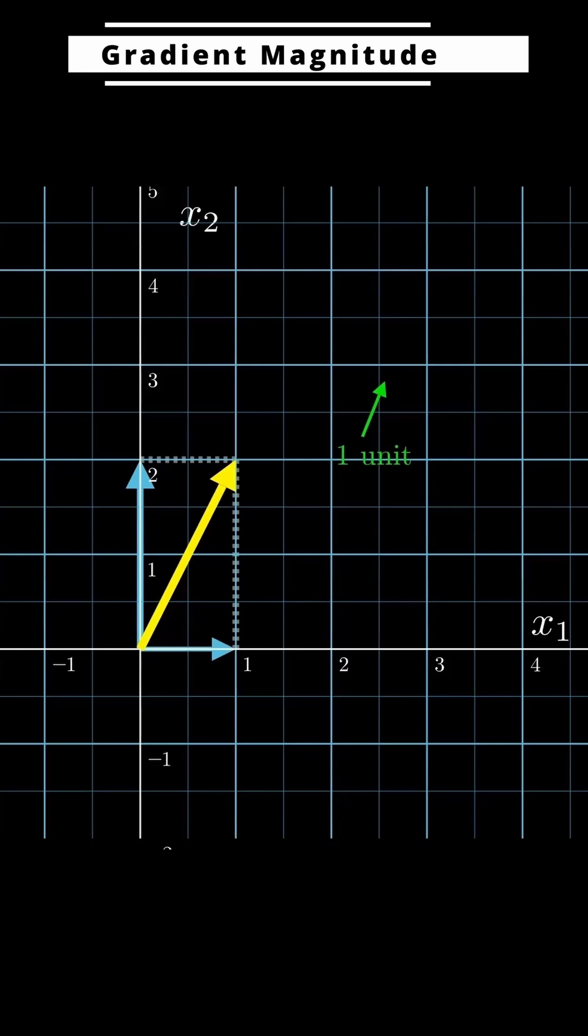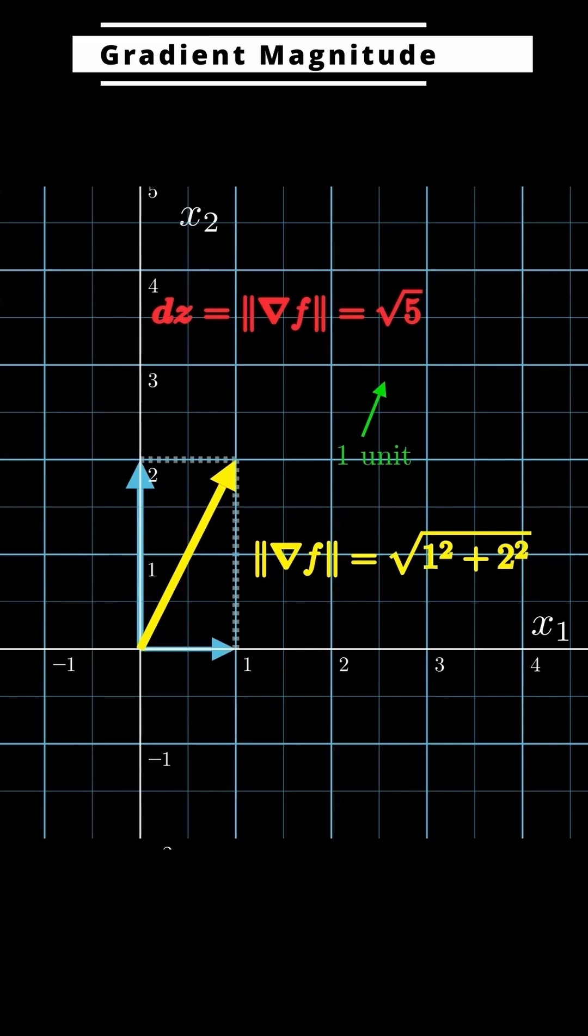In this example, the gradient's magnitude is the square root of 5. So that means if we move just one unit in the yellow gradient direction, the function value goes up by the square root of 5.